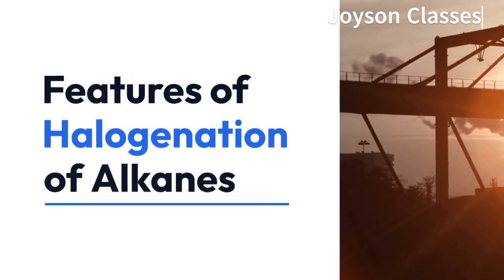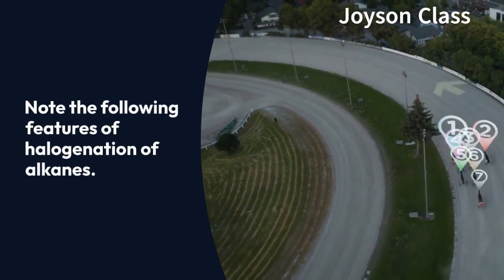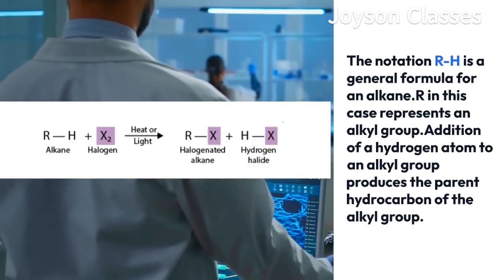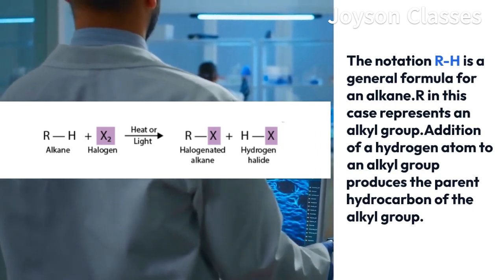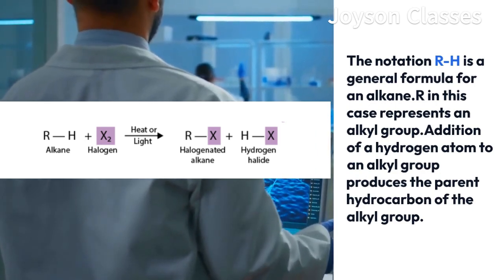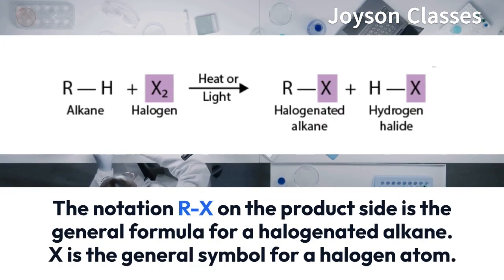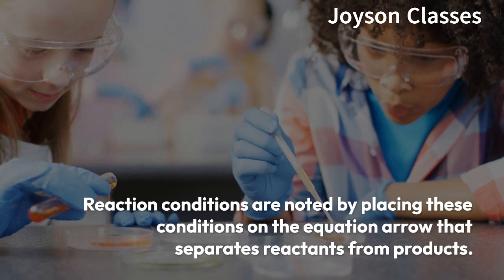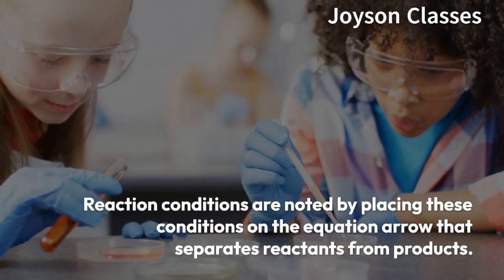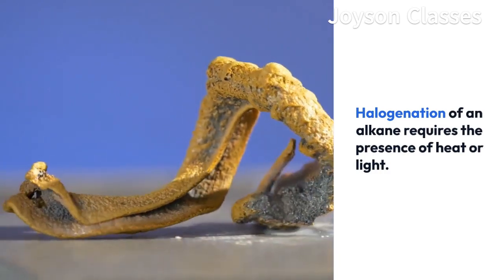Features of halogenation of alkanes: The notation RH is a general formula for an alkane, where R represents an alkyl group. Addition of a hydrogen atom to an alkyl group produces the parent hydrocarbon. The notation RX on the product side is the general formula for a halogenated alkane, where X is the general symbol for a halogen atom. Reaction conditions are noted on the equation arrow separating reactants from products. Halogenation of an alkane requires the presence of heat or light.